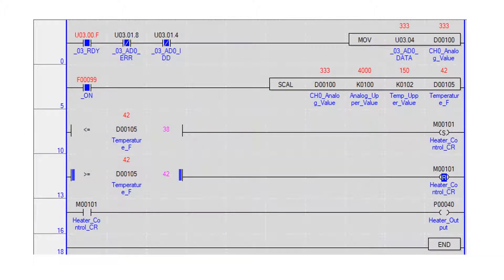To read the analog value, the module ready bit must be on. The channel 0 error bit and channel 0 disconnected bit must be off. A move instruction moves the analog data from the module channel 0 to memory location D100.